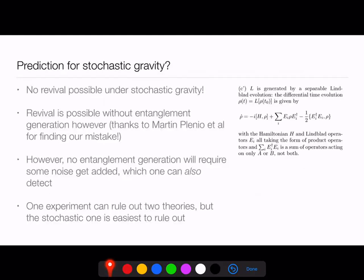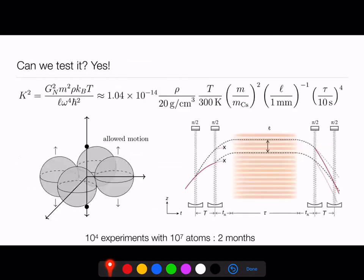To conclude on this section: there is no revival possible under stochastic gravity — you can read about this in the preprint. You can get revival without any entanglement generation in more general theories, and we'll discuss a theory that does that shortly. The lack of entanglement generation adds noise which one can detect using the same atom interferometer experiment. In principle, one experiment can rule out two theories, but the stochastic one is by far the easiest to rule out. Let's look at the numbers for the proposed example.